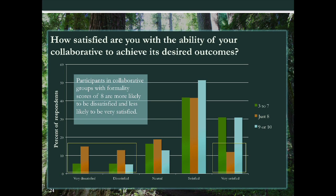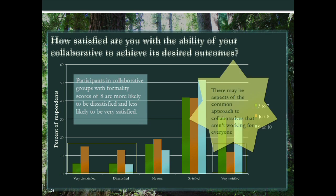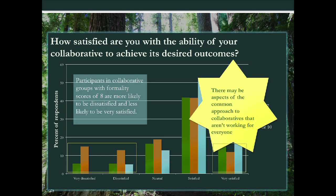Then we tried to relate those organizational features to the survey results, analyzing perceptions of success by the groups respondents were from and by the formality scores of those groups. Satisfaction is fairly high everywhere — that's an important takeaway. But digging deeper, we actually found that participants in collaborative groups with the common formality score of eight are statistically more likely to report being dissatisfied or very dissatisfied, and less likely to report being very satisfied than others. More than a quarter of respondents in that formality group were dissatisfied overall. So we have to ask: is this common model deficient somehow, or is there something else these groups have in common leading to greater dissatisfaction?